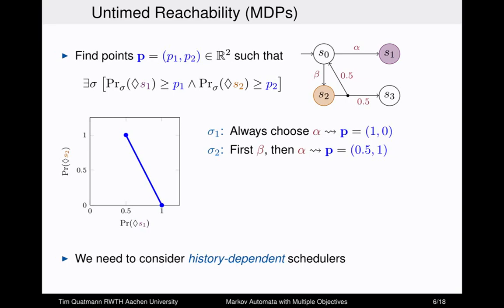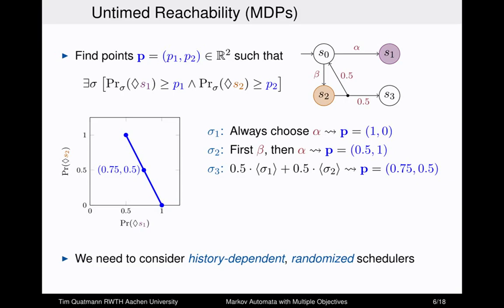We can also achieve all points on the line between the two extreme points by using randomization. For example, a scheduler that flips a coin — with probability 0.5 behaves like sigma1 and otherwise like sigma2 — gives the achievable point in the middle. In general, we need history-dependent and randomized schedulers.